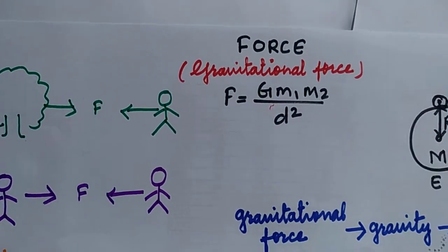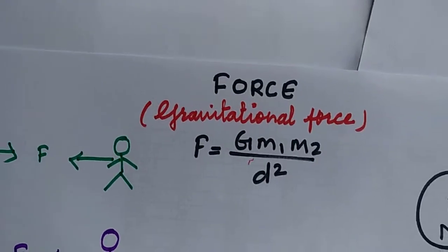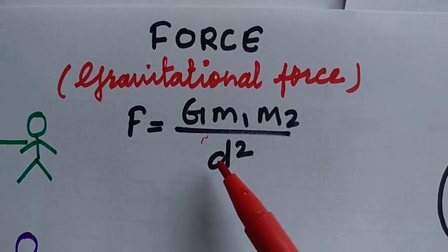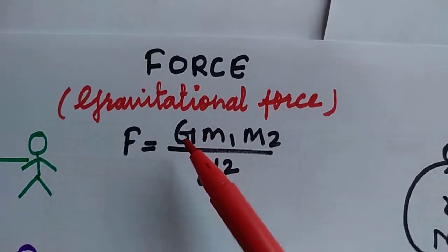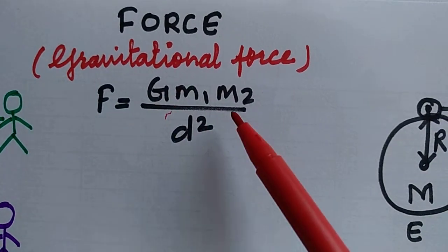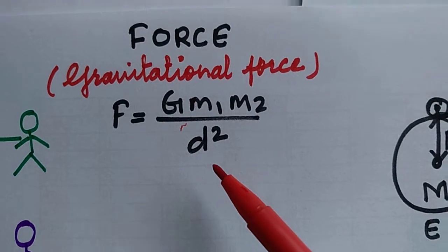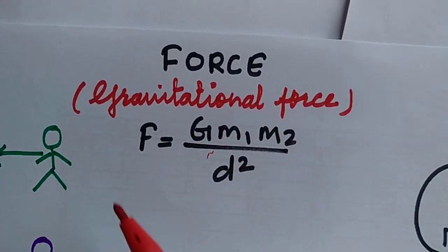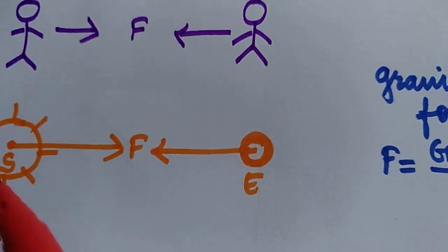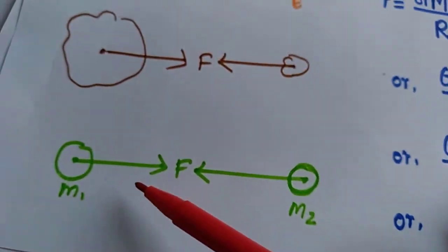Newton gave us a law to calculate gravitational force — Newton's Universal Law of Gravitation. The formula is F = G·m1·m2 / d², where G is the universal gravitational constant, m1 is the mass of the first body, m2 is the mass of the second body, and d is the distance between their centers. Using this formula we can calculate gravitational force between any two objects in the universe, whether as large as the sun and earth or as small as two people.